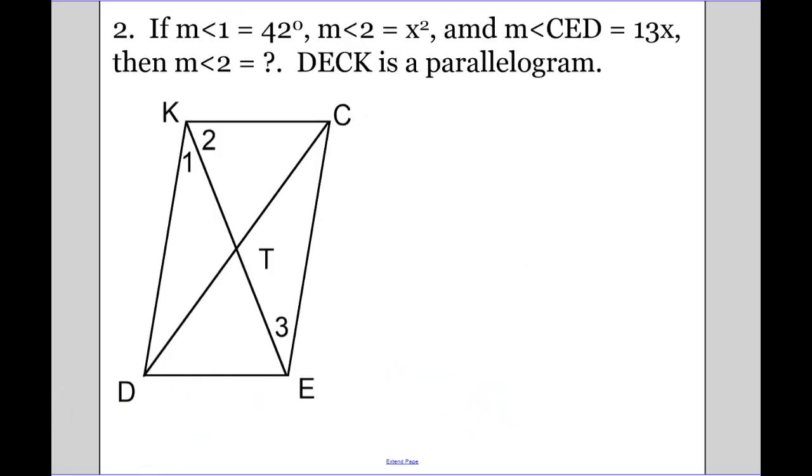Next example. Measure of angle 1 is 42. Measure of angle 2 is X squared. Angle CED, so the whole big angle, is equal to 13X. I need to find the measure of angle 2.